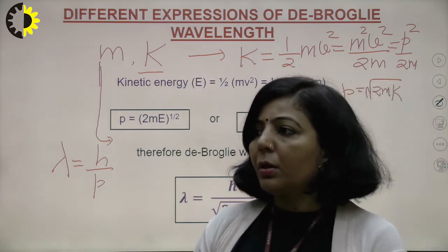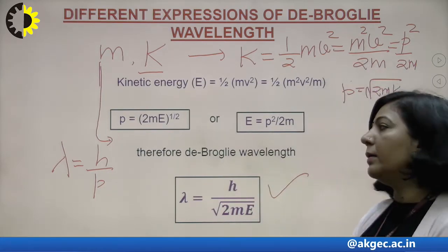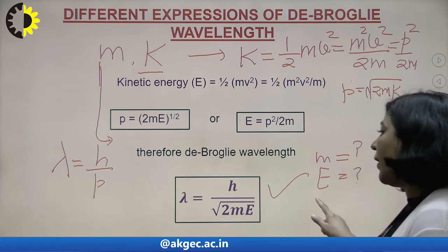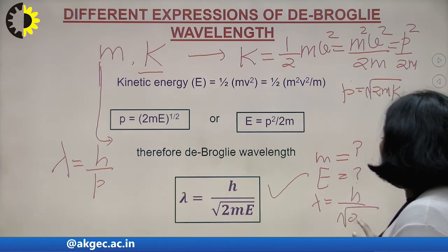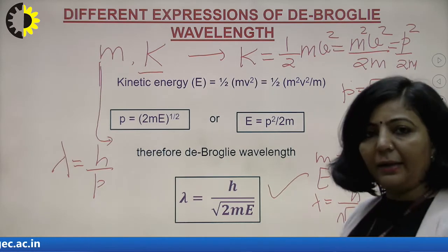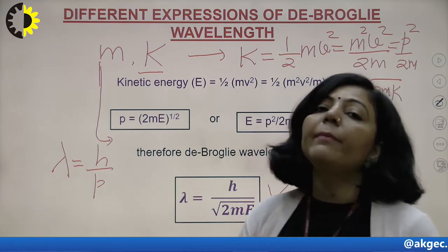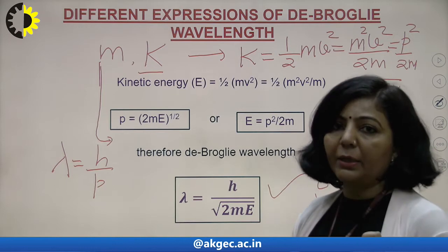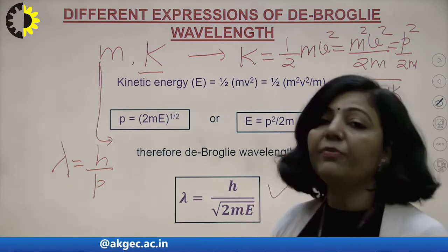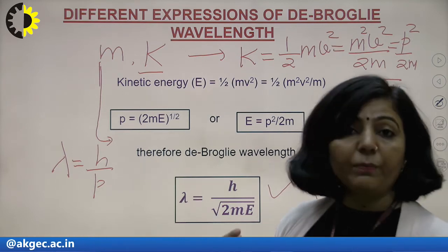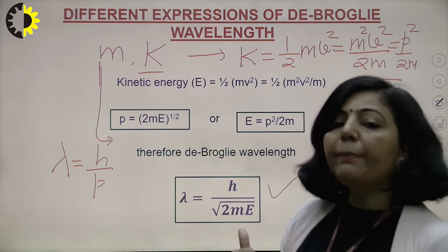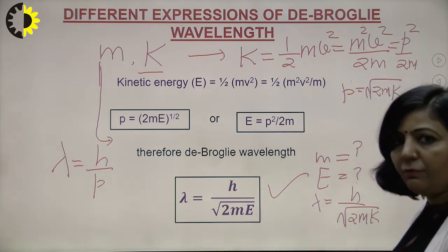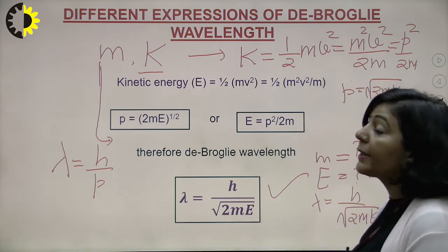You can solve problems using this formula: if the mass of a particle and its kinetic energy are known, the de Broglie wavelength is h/√(2mK). However, remember that the expression K = ½mv² is applicable only in classical mechanics. In relativistic mechanics, when a particle moves with velocity comparable to c, you cannot use the same expression for kinetic energy.